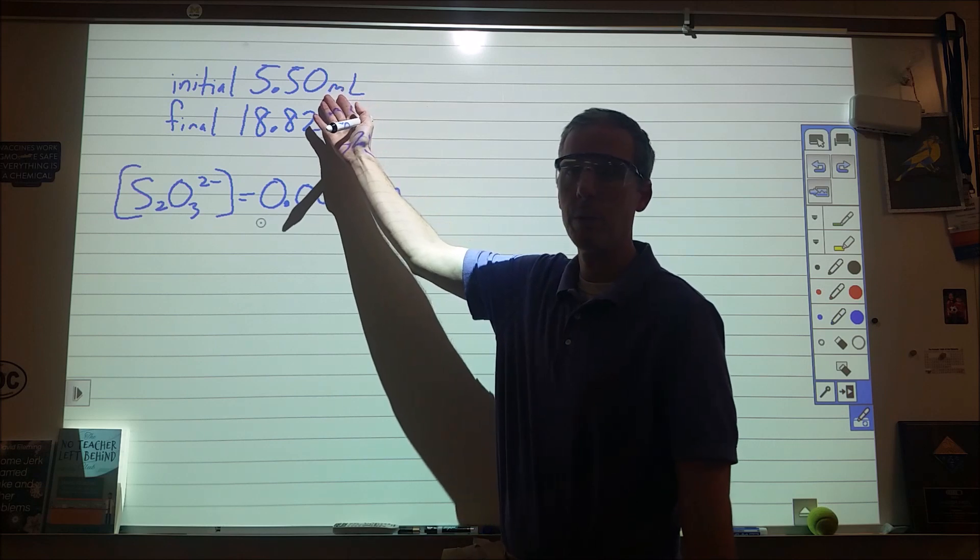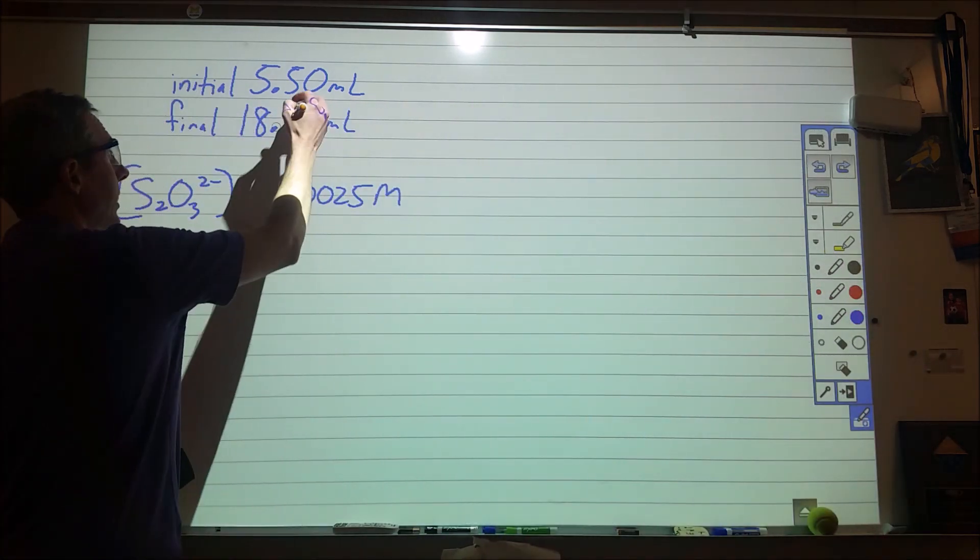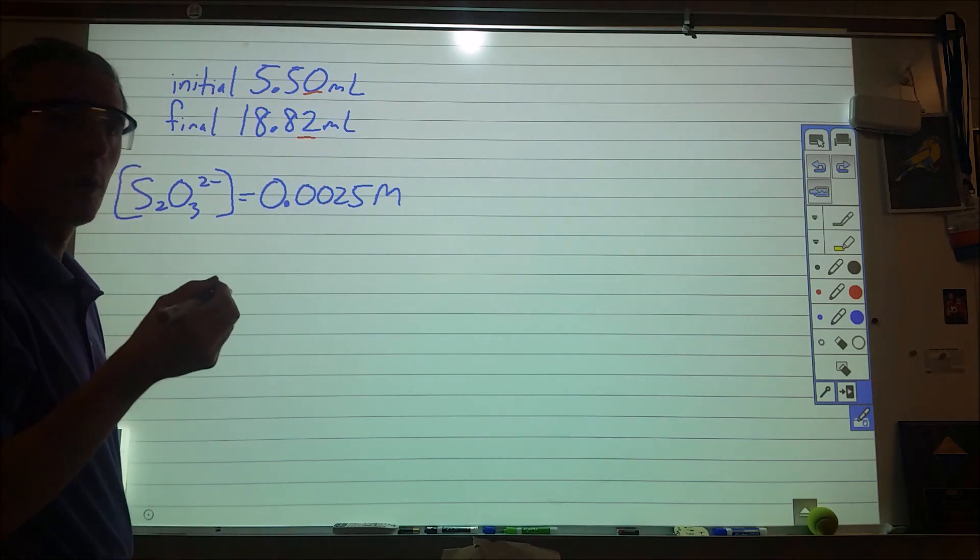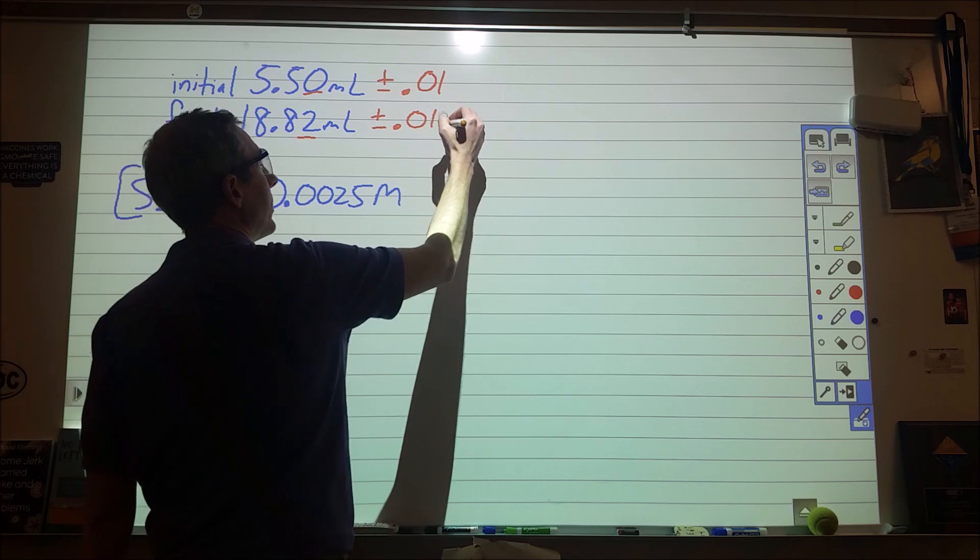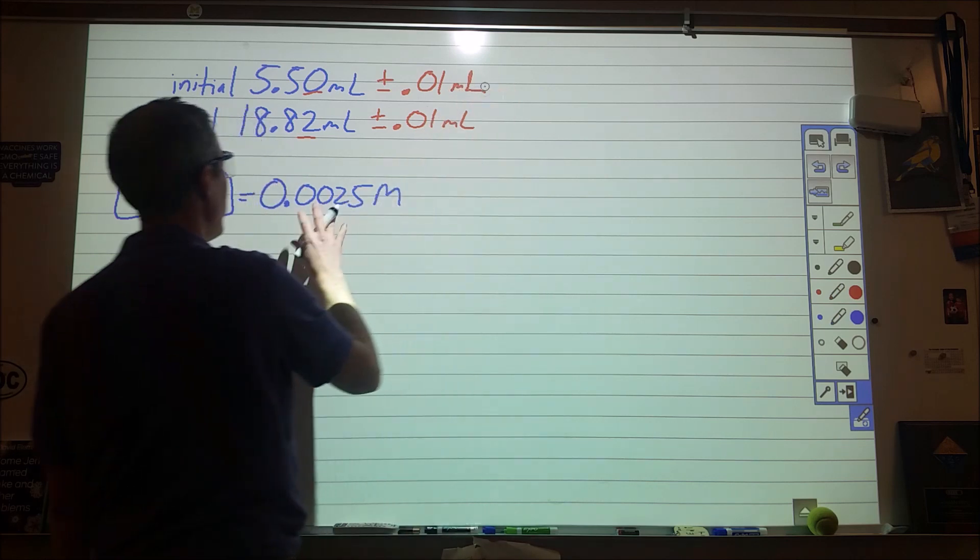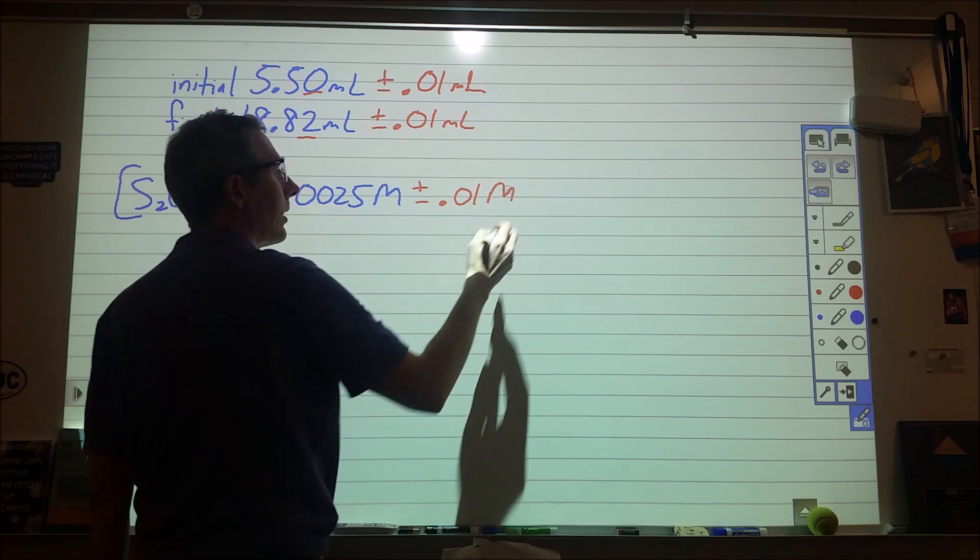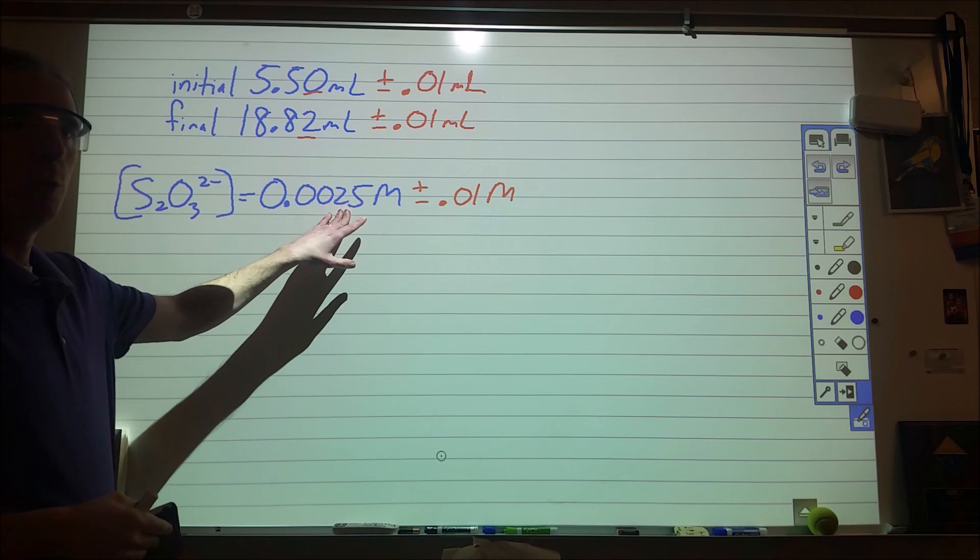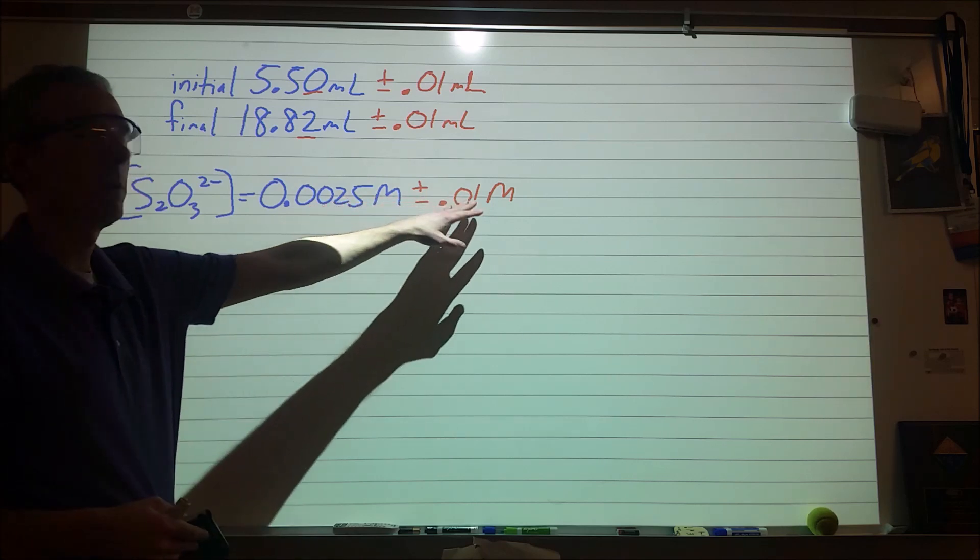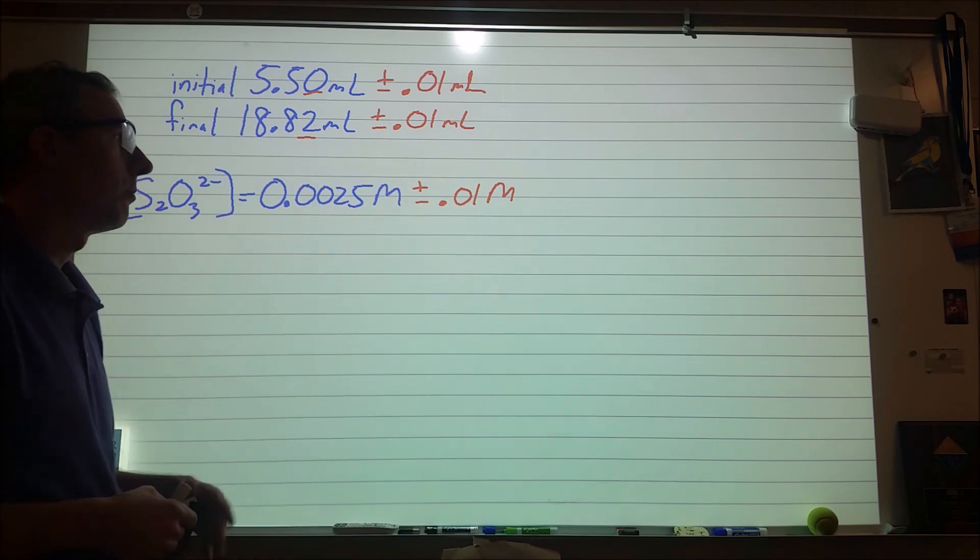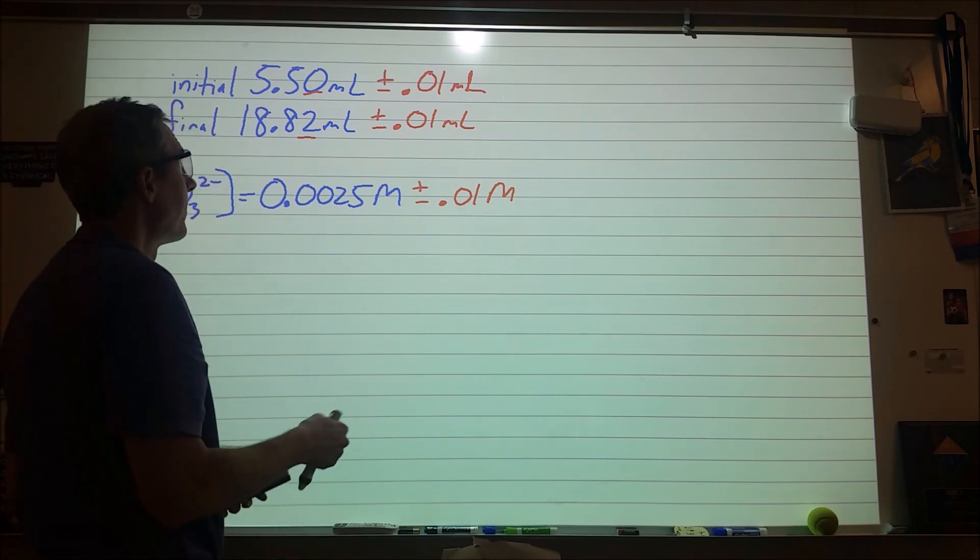Our initial burette reading for the one that I did prior to that with the first sample was 5.50 milliliters. The final was 18.82. So for the error for that, the one that I do is I just take the final significant digit and I do plus or minus one of that, so for this I would do plus or minus 0.01 milliliters. And then likewise with the thiosulfate concentration, we're going to say that that's plus or minus 0.01 molar. Ideally this would be calculated if you had prepared the solution yourself with errors for the mass and volume measurements.